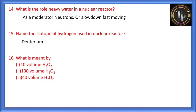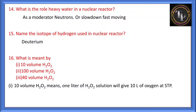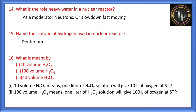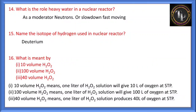What is meant by 10 volume, 100 volume, and 40 volume H2O2? This is about strength. 10 volume H2O2 means one liter of H2O2 solution will give 10 liters of oxygen at STP (standard temperature and pressure). 100 volume H2O2 means one liter of H2O2 solution will give 100 liters of oxygen at STP. Similarly, 40 volume means one liter of H2O2 will produce 40 liters of oxygen at STP.